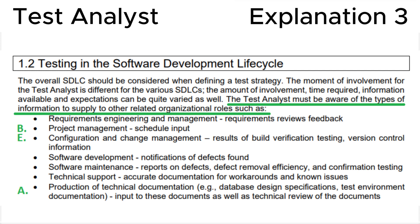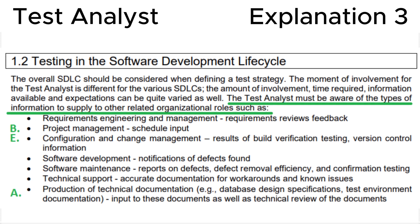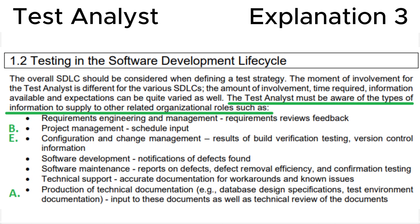Let's look at section 1.2, Testing in the Software Development Life Cycle, in the ISTQB syllabus. Here we can see that the test analyst must be aware of types of information to supply, such as Project Management Schedule, which corresponds to answer B, Configuration and Change Management, and reduction of technical documentation, such as database design specification and test environment documentation, which corresponds to answer A.